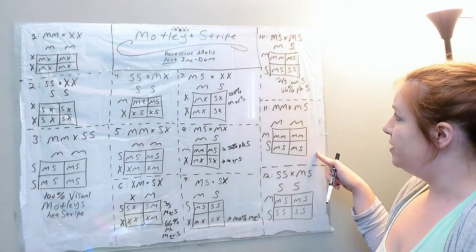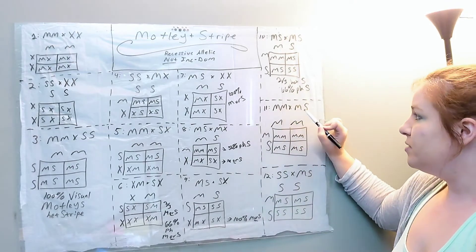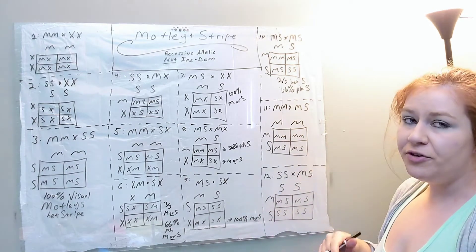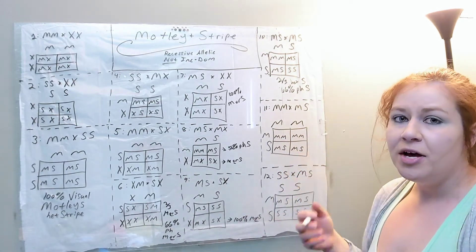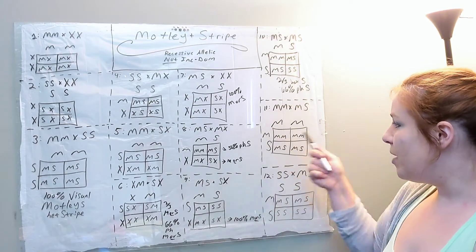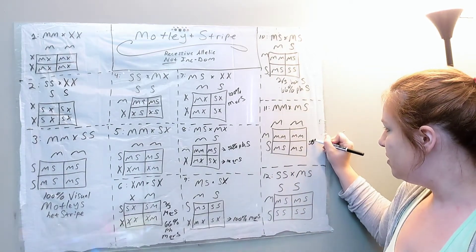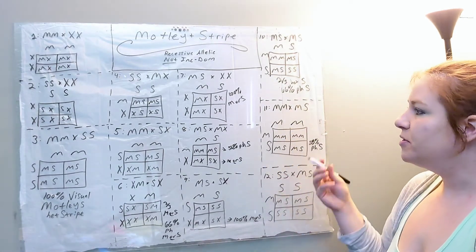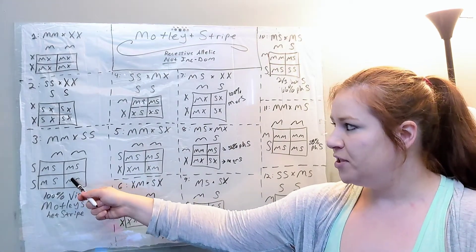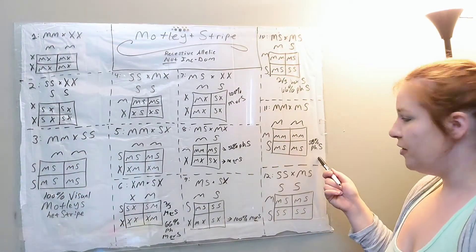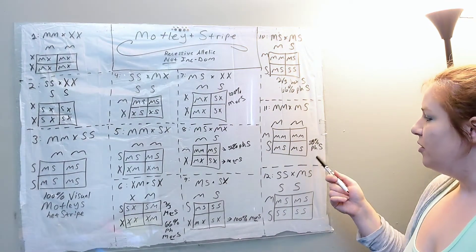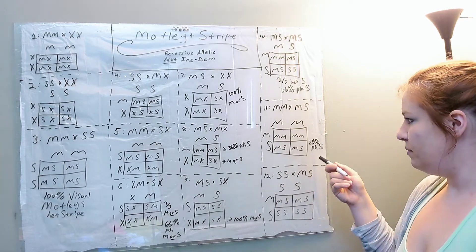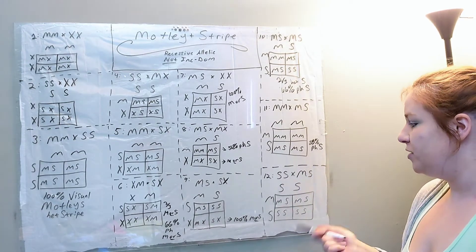Pair eleven is somewhat similar: a Motley to a Motley Stripe. You get 100% visual Motleys, half of them being Het Stripe. So label all the Motleys from this clutch as 50% possibly Het Stripe. If you take a baby from pairing ten and breed it back to the Motley parent, all Motley babies should be labeled as 50% possibly Het Stripe.